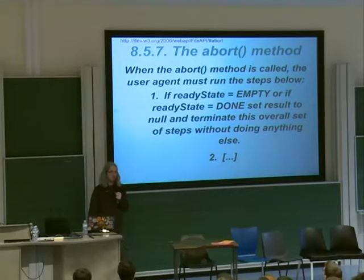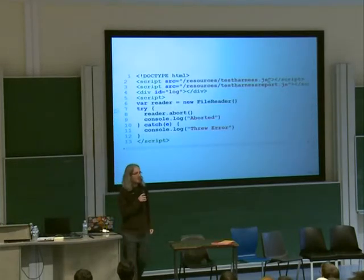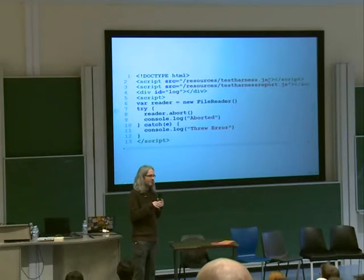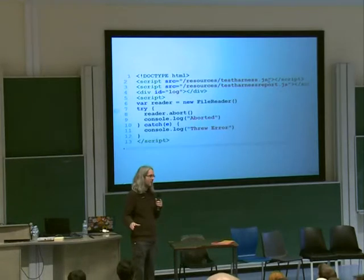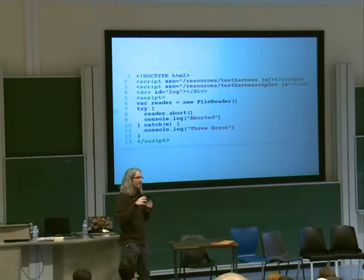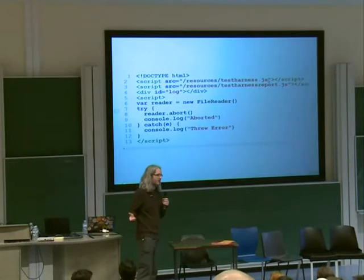Now we're going to turn our miniature example into a proper test case ready for submission. The first thing we need is a little bit of boilerplate. We have the script testharness.js, which provides the testing framework. It's specific to this test suite — it's designed with testing browsers in mind, which is why we haven't reused other JavaScript frameworks. We also have testharness-report.js, which helps browser vendors integrate this into their continuous integration system — that file is for them to report results back. And we have a div with id equals log to dump human-readable output.